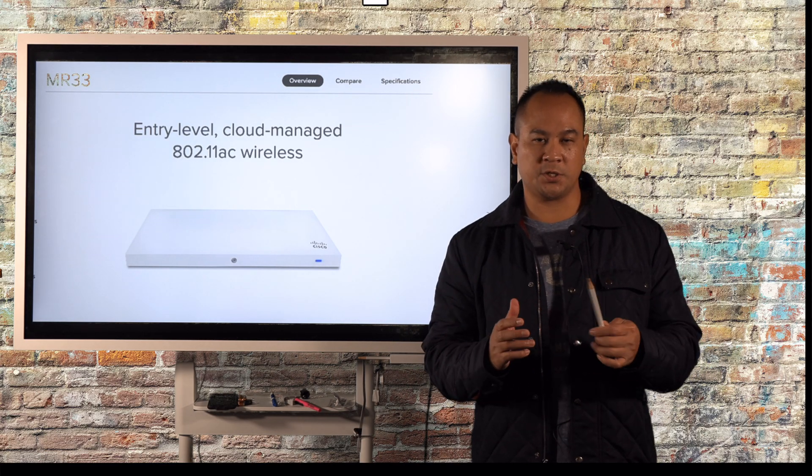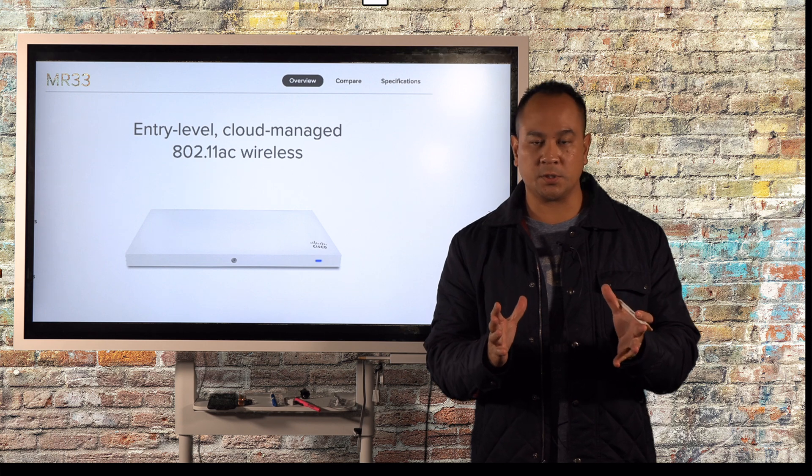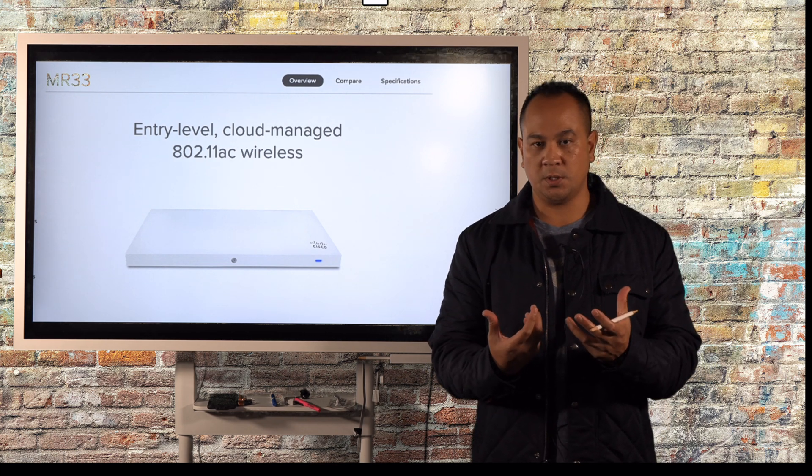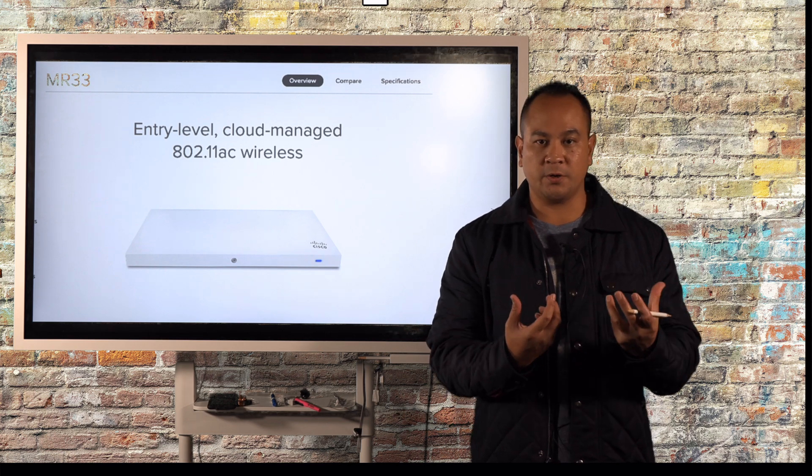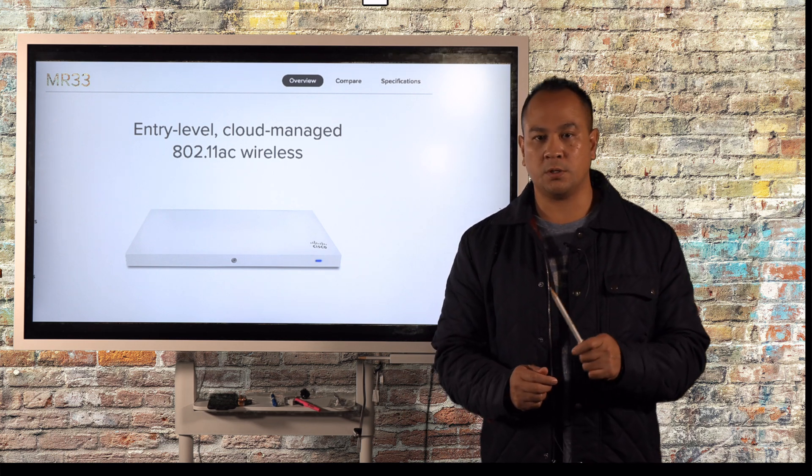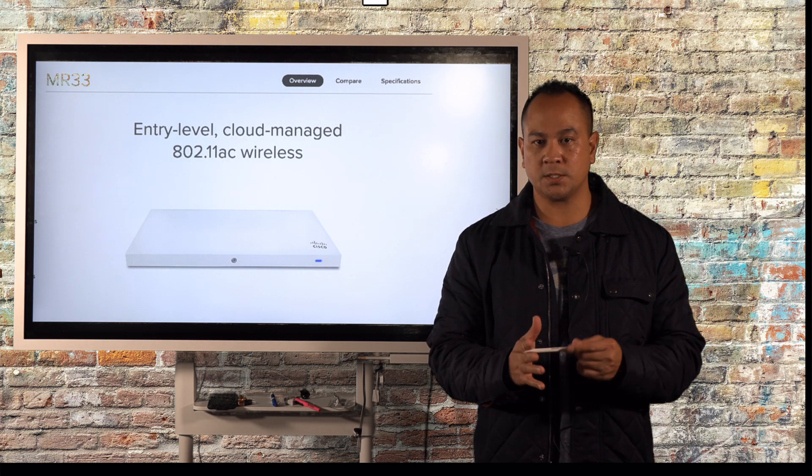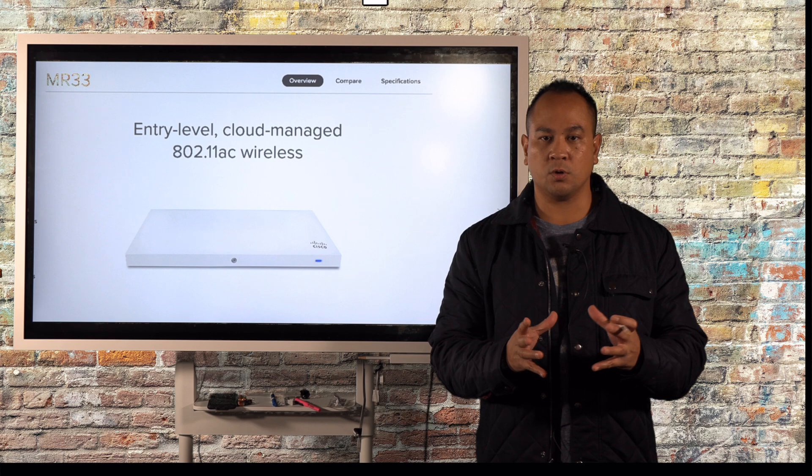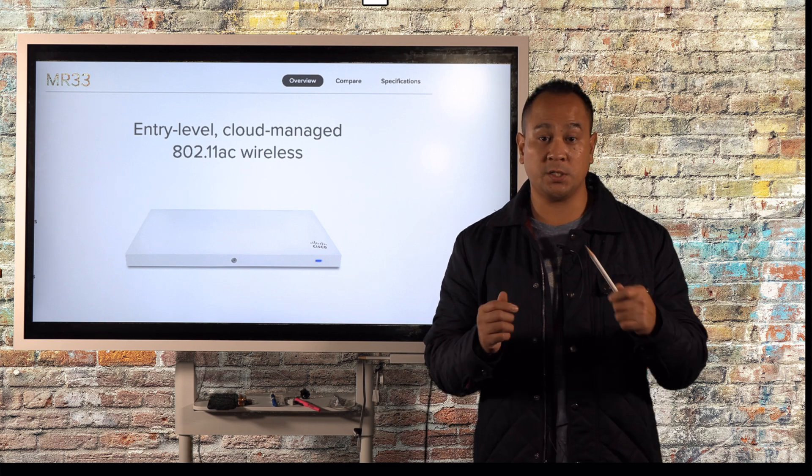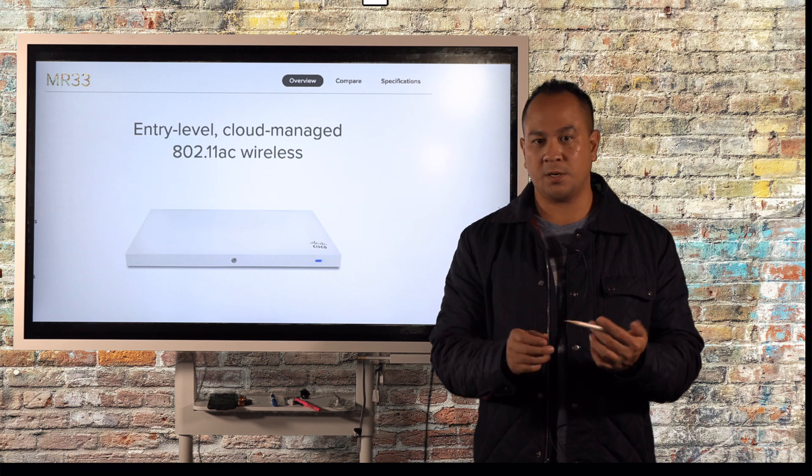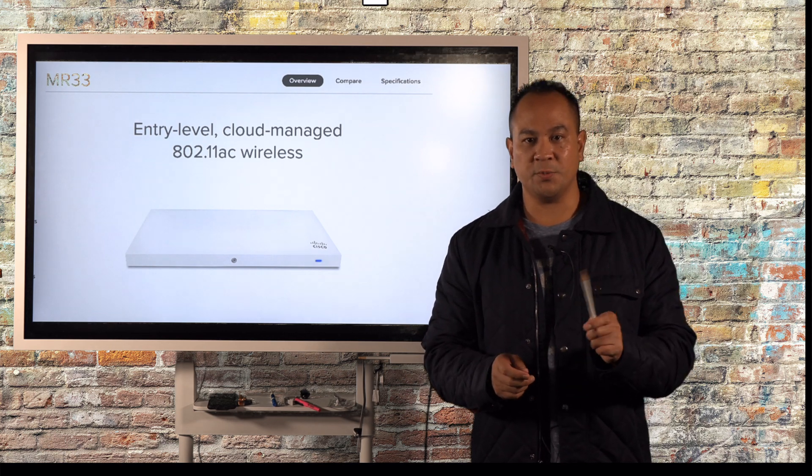Our group in Toronto does a lot of installations, primarily about 90% of the time we install warehouse management solutions or systems. A lot of our MR series or Meraki series are actually installed in warehouse ceilings or in the rafters. We do about 10 to 15% in office buildings and outdoor environments. In today's video we're going to go over the MR-33, what comes in the box, and how to install it in your warehouse environment.